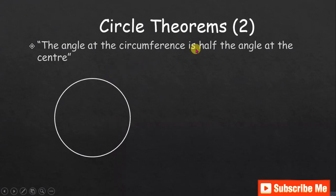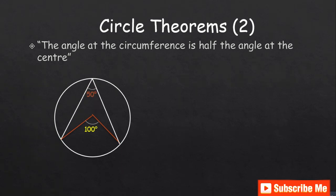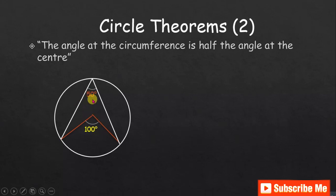Continuing: the angle at the circumference is half the angle at the center. So the angle at the circumference is half of the angle at the center. If the center angle is 100 degrees, the circumference angle is 50; if the center angle is 200 degrees, the circumference angle is 100. In the proof, if the center angle is 2x, the circumference angle is x.